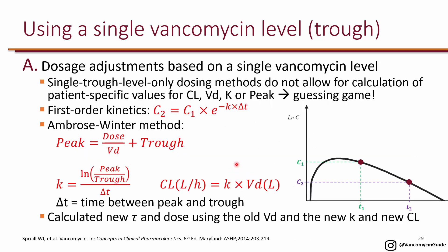That was the fast way of doing it based on a single level. Another way is to use population kinetics with the first-order kinetic equation: C2 equals C1 times e to the negative K times delta T, where delta T is the time between C1 and C2.